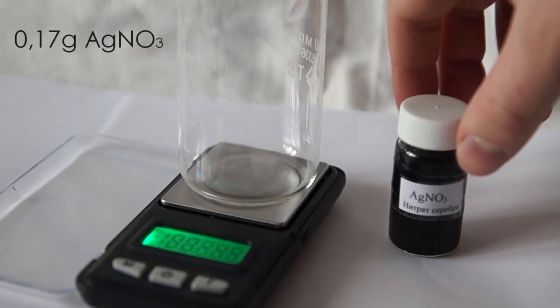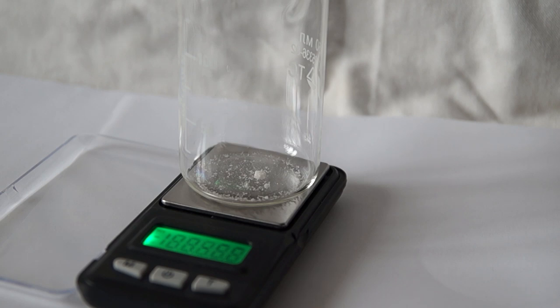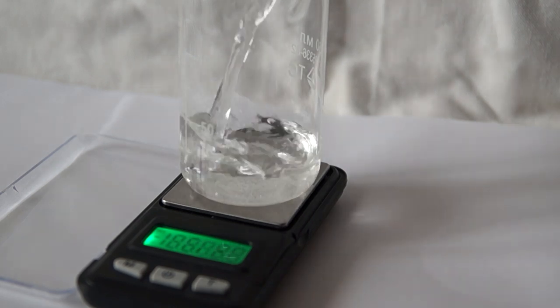For the third solution we need 0.17 g of silver nitrate which will dissolve in 40 ml of distilled water.